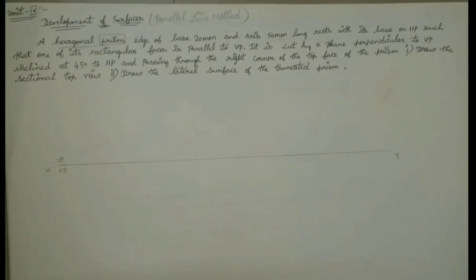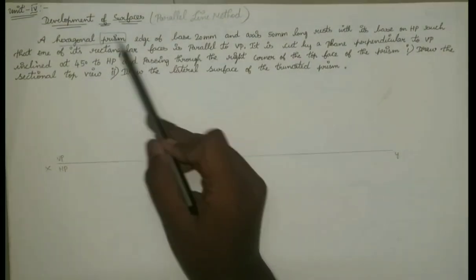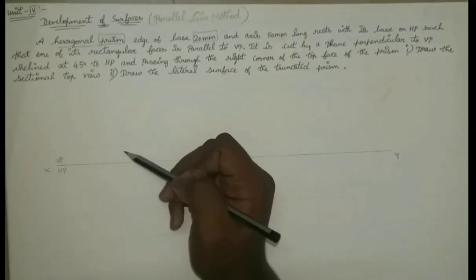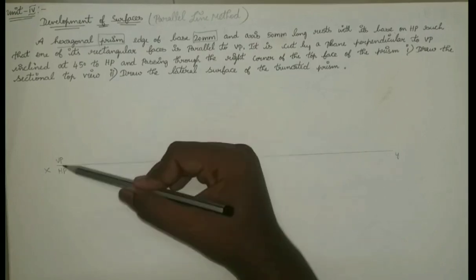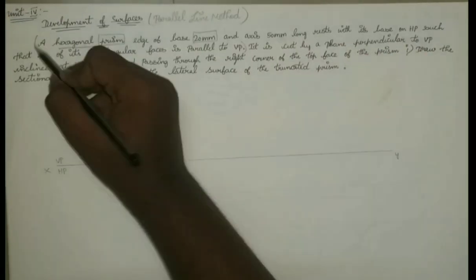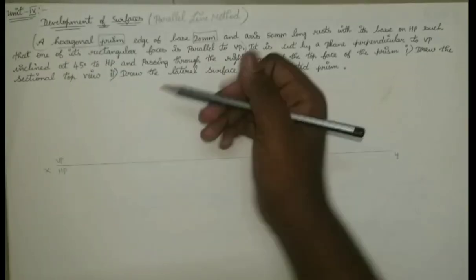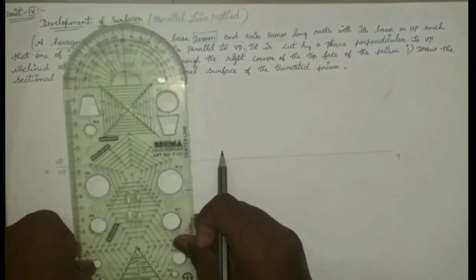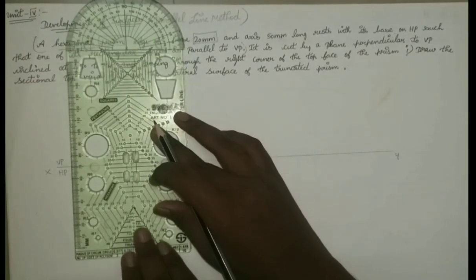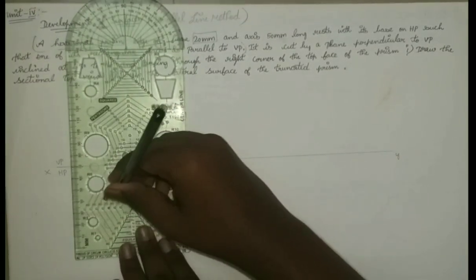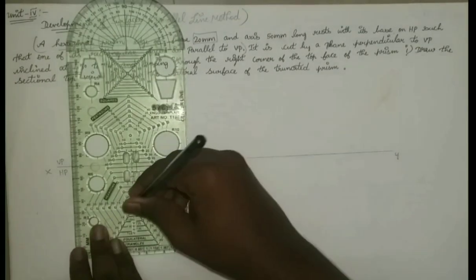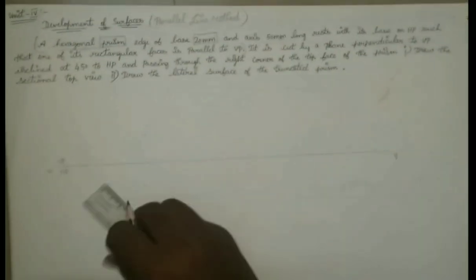Now let's look at the hexagonal prism: edge of base 20mm and axis 50mm long, resting with its base on HP. Now let's look at the hexagonal shape. In the hexagonal, we are going to draw the hexagonal. That is 20mm, so I will use the template with 20mm length. That is hexagonal - I will take the length.